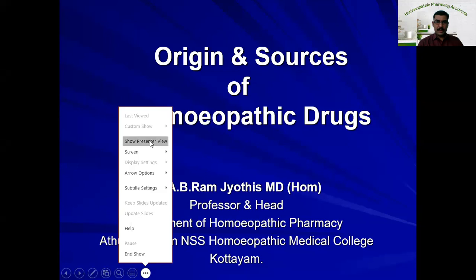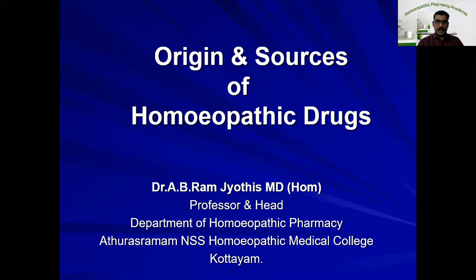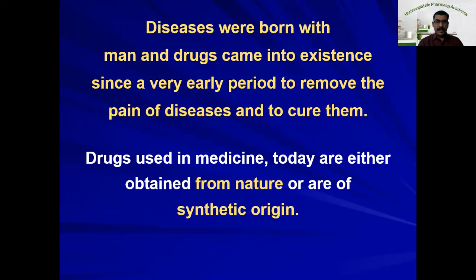Today's topic is origin and sources of homeopathic drugs. We are discussing about where homeopathic drugs are taken from and how they are prepared. We all know diseases were born with man, and drugs came into existence since very early period to remove the pain of diseases and cure them. Our nature has kept the means of cure of these diseases within herself. Drugs used in medicine today are either obtained from nature or are from synthetic origin, and most of the medicines used in homeopathy are taken from nature itself. That is why homeopathic drugs are also called natural medicines.